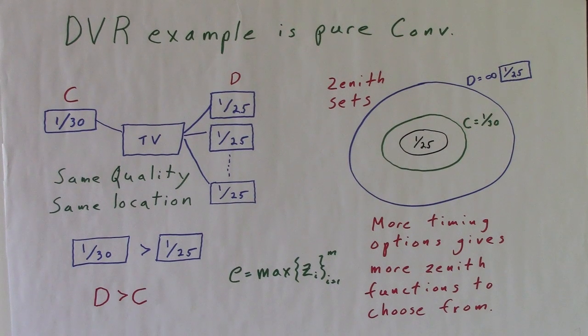The zeniths produced from C is a proper subset of D. These are testable predictions.